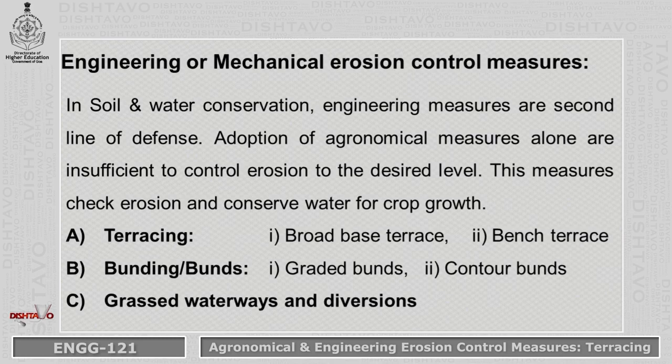There are different types of Engineering Erosion Control Measures: terracing, bunding, and grassed waterways. Terracing has two types: broad-based terraces and bench terraces. Bunding also has two types: graded bunds and contour bunds. We'll discuss all these measures in detail.